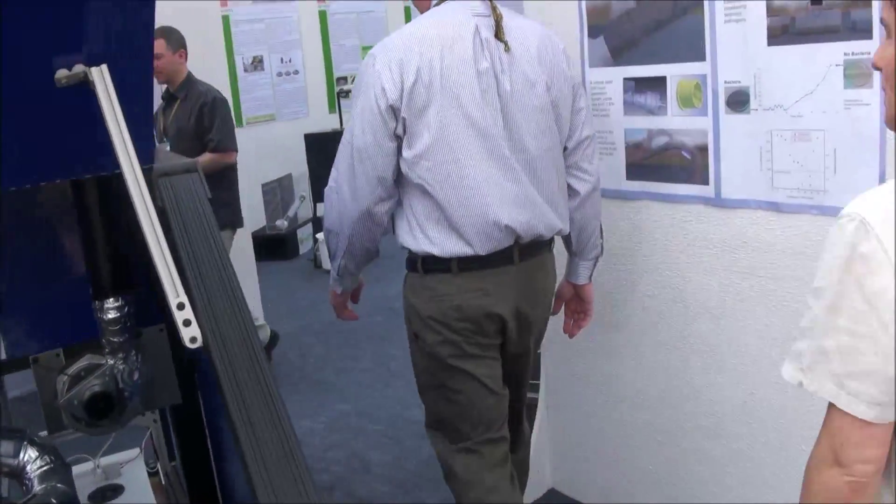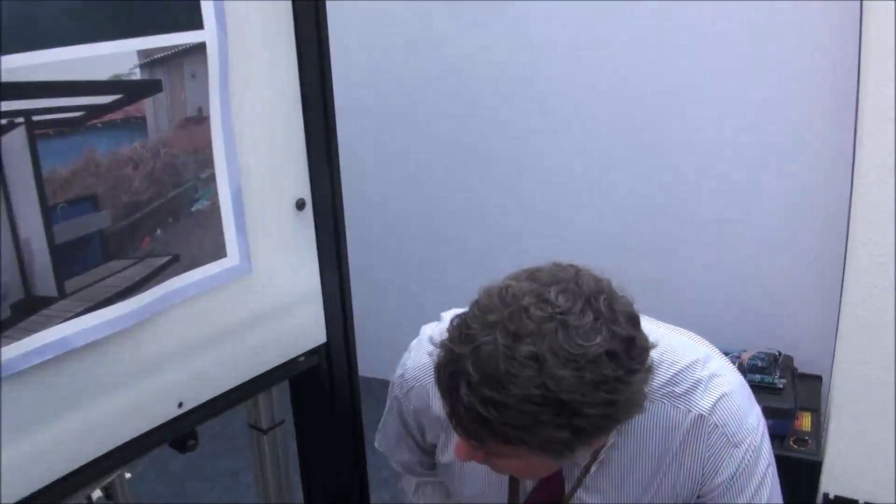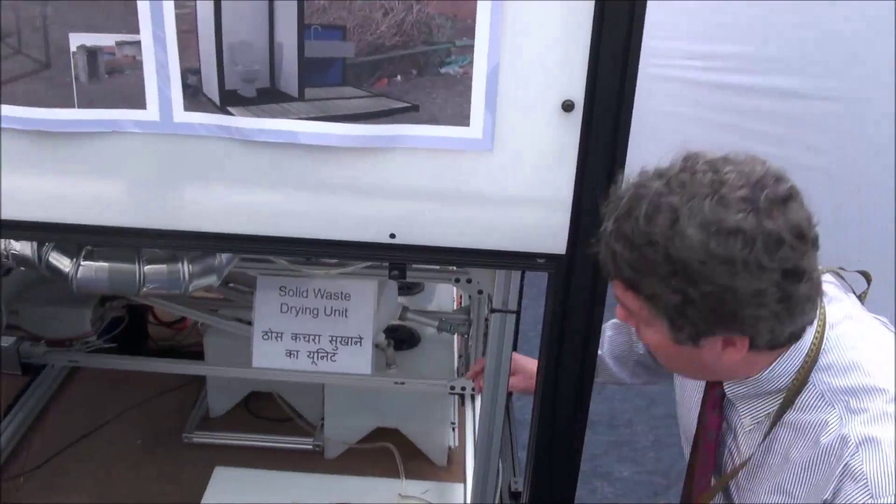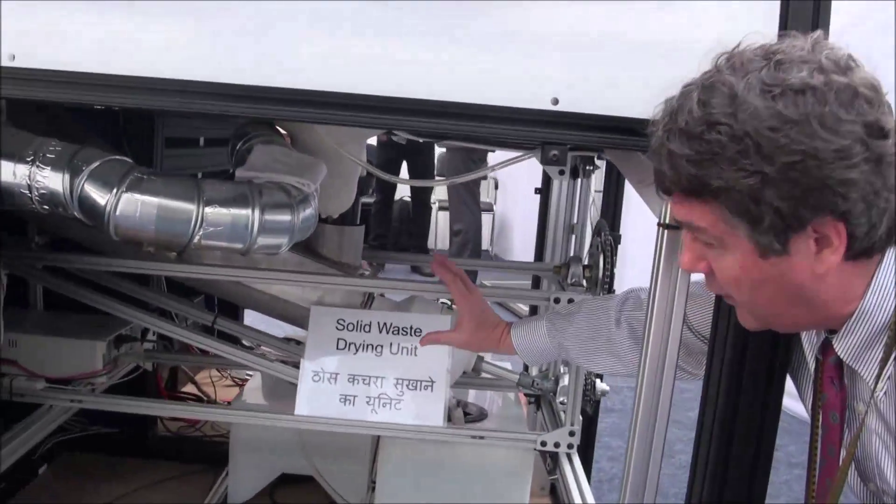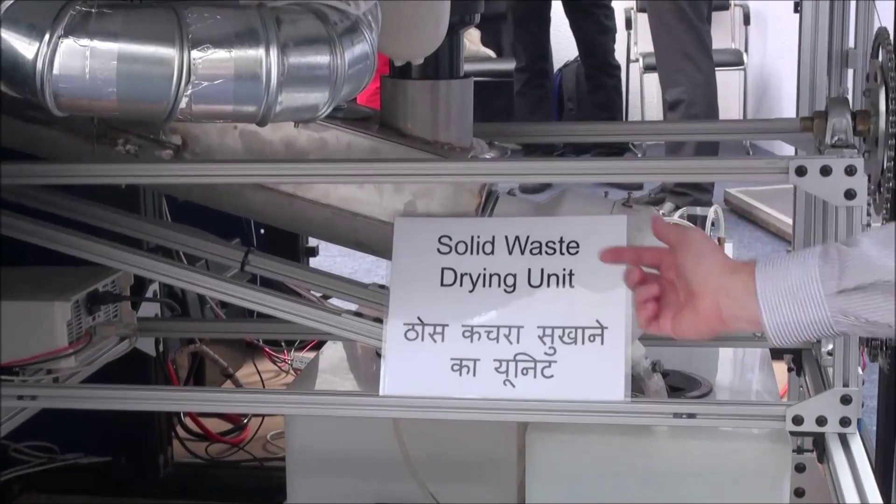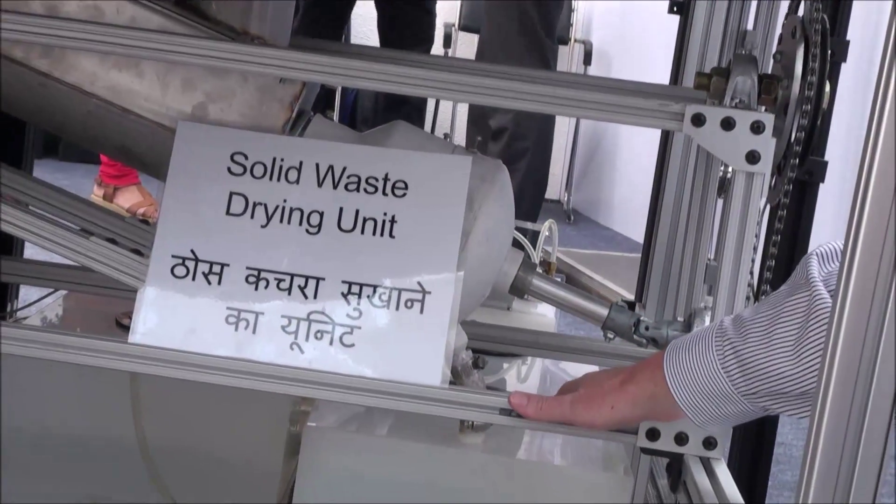So the solid liquid separation happens right at this point. As the auger rotates, the solid waste goes up and the liquid waste goes down into this first settling tank.